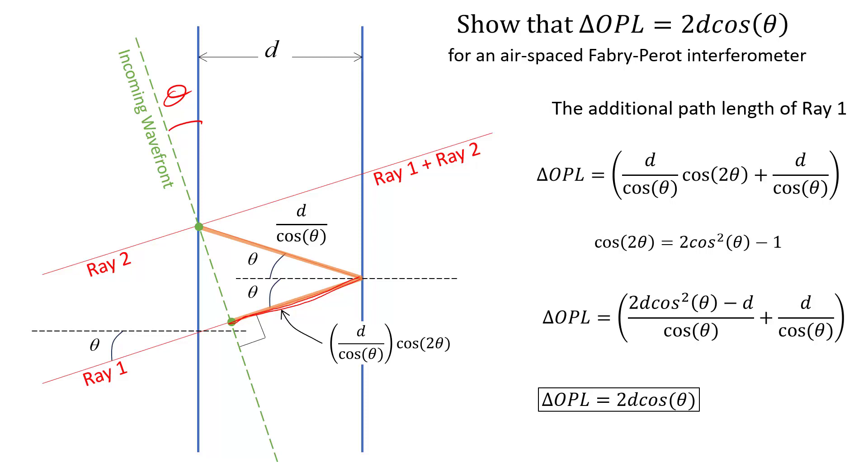But there's still a conceptual roadblock if you think about large angles. What happens as theta approaches 90 degrees? As theta gets past 80, 81, 82 degrees, it still seems that the additional path length is going to go to infinity as theta gets close to 90 degrees.